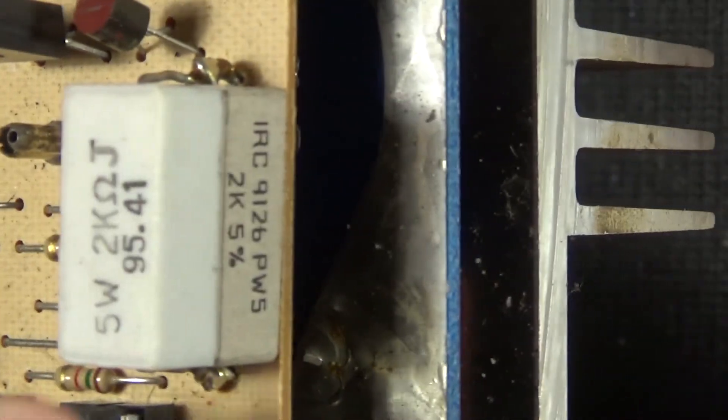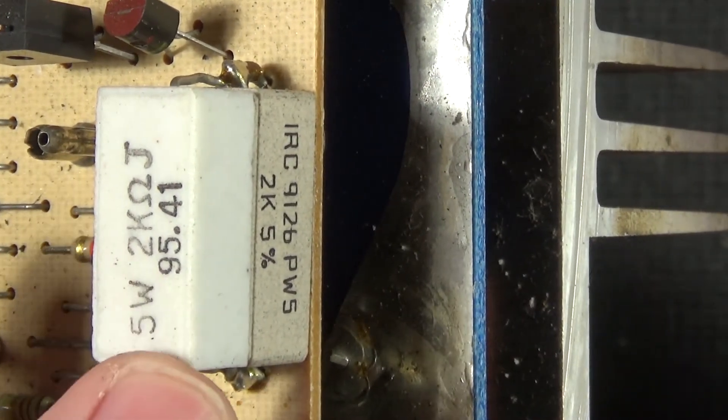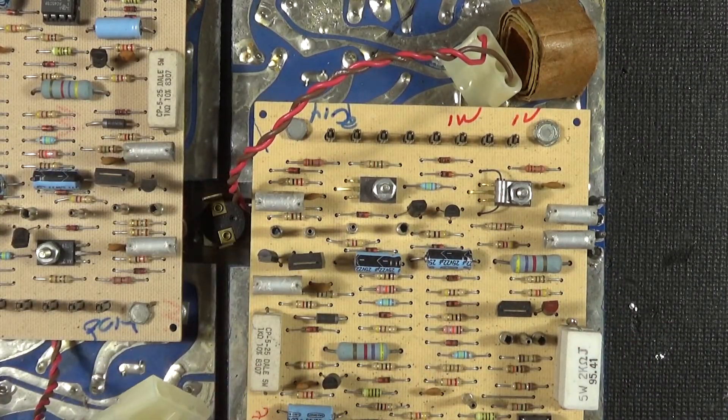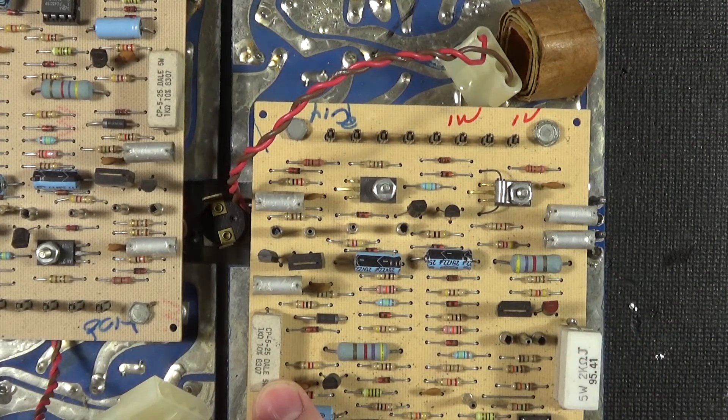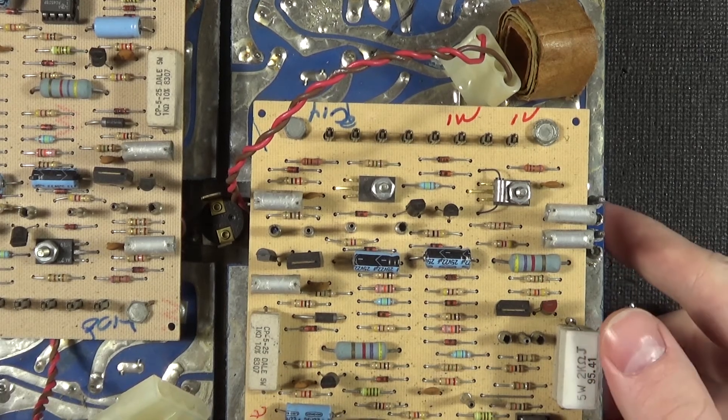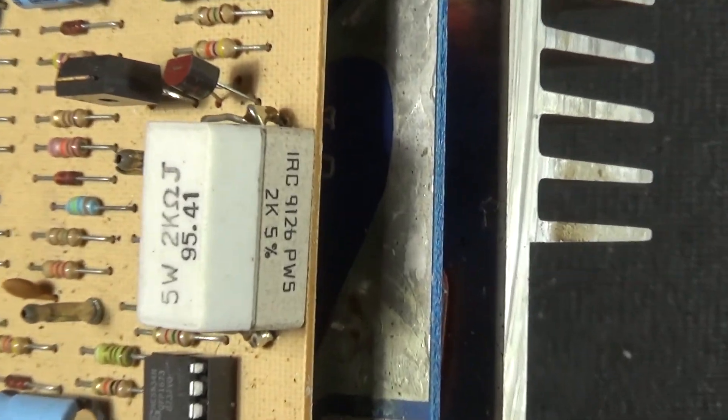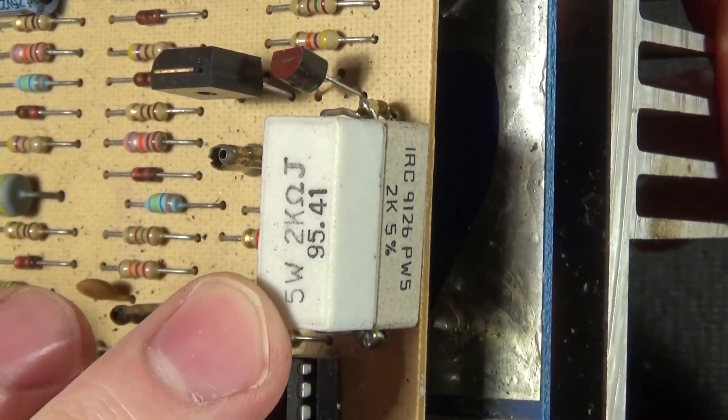Actually see they stacked the resistors because these two boards are identical and every position is a 1k resistor, except in this spot, they're obviously stacking, probably didn't have in stock a 1k, what is it? 5 watt? Yeah, 5 watt resistor.